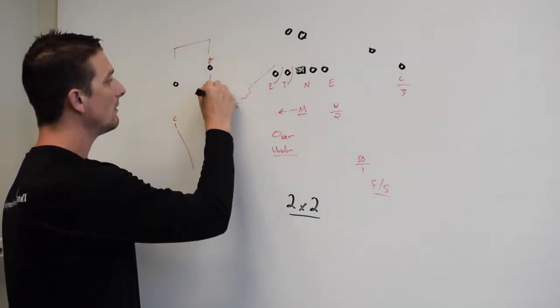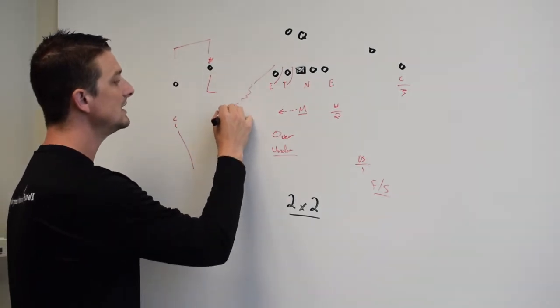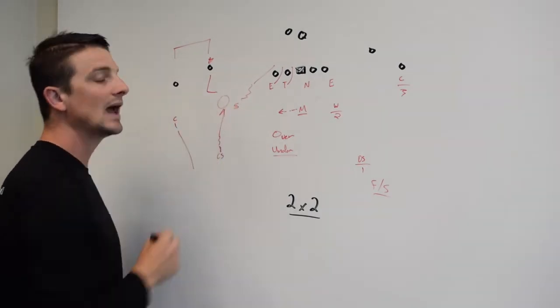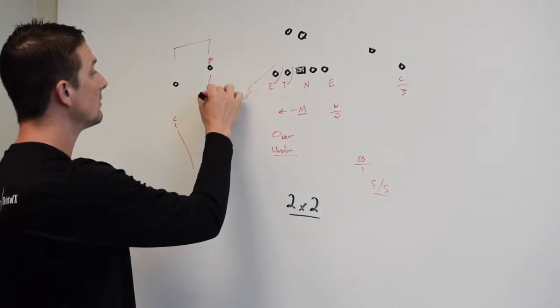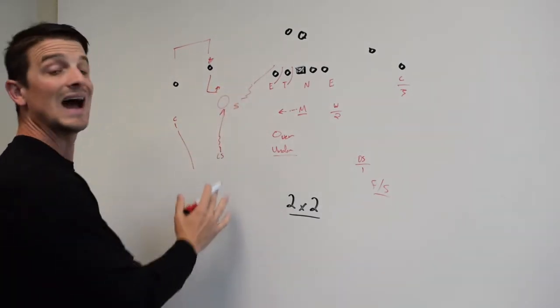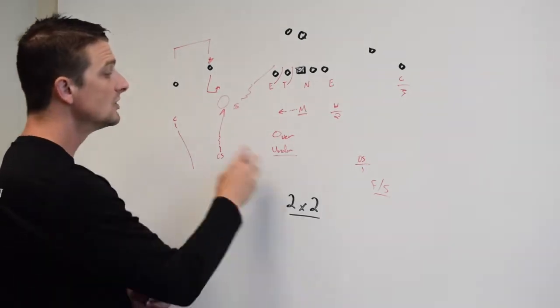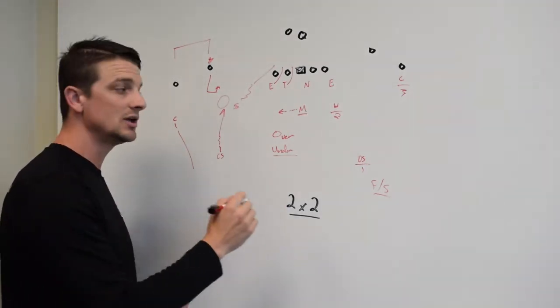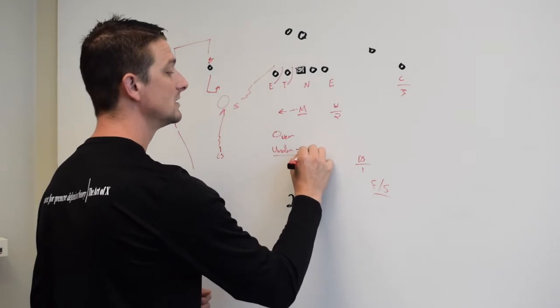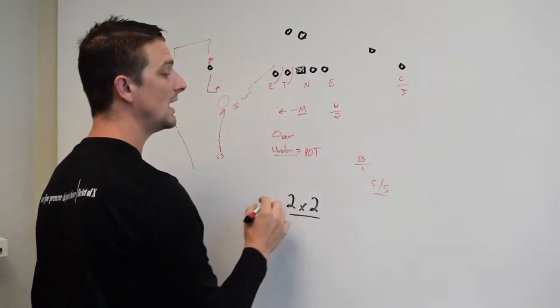The best coverage would be some sort of robber coverage, where he's robbing the curl. As he goes on a slant route, I've got him moving down. He now attacks the slant route. Now we've affected the hot route. He runs a hitch route and sits at five, I'm coming down right on top of him to counteract the hitch route. Under is good if you have hot routes. If you're seeing hot routes by the offense...